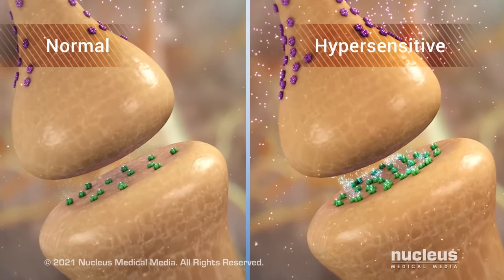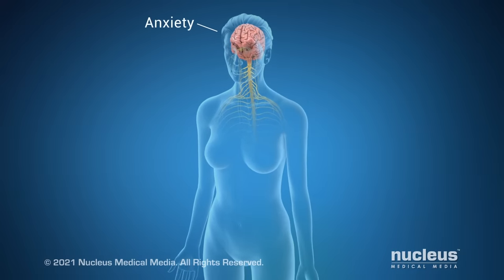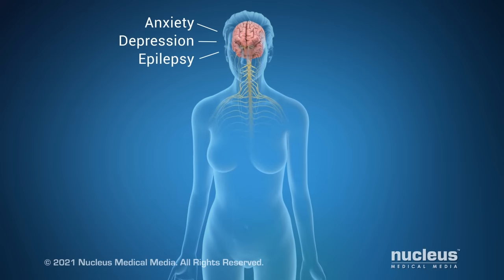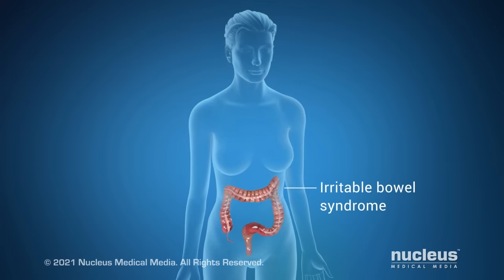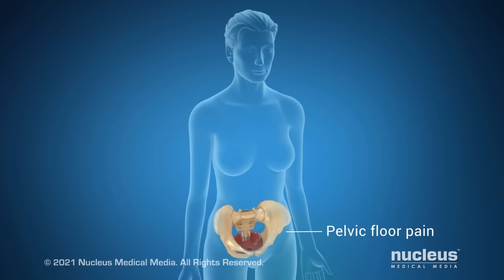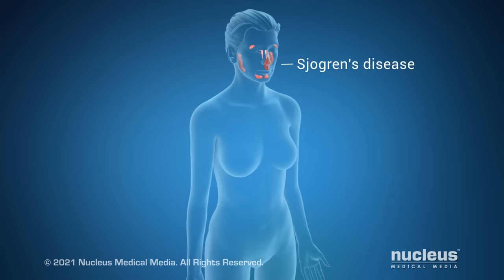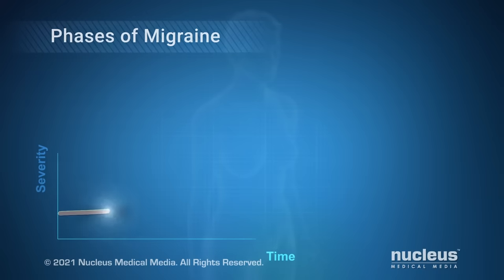These mutated genes affect the function of other parts of the body. As a result, people with migraines may also have anxiety, depression, epilepsy, hypothyroidism, irritable bowel syndrome, pelvic floor pain, fibromyalgia, Sjogren's disease, and others.